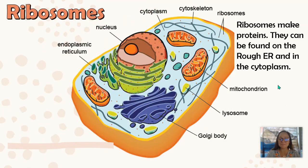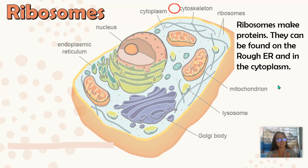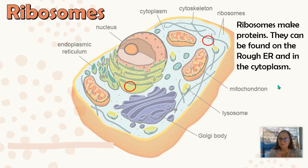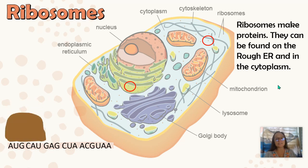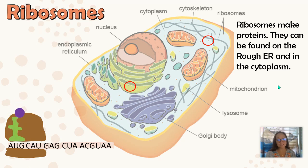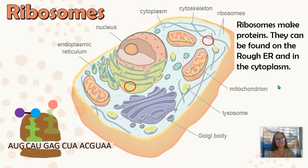Our next organelle is ribosomes. Ribosomes are found in all cells. In this picture you can see the ribosomes are these little tiny red dots located within the cytoplasm as well as being located on the rough ER. Their job is to make proteins — they attach one amino acid to another in a long chain called a polypeptide. Messenger RNA serves as the code or directions for how the ribosome builds that amino acid chain.